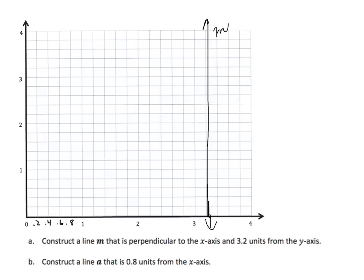Construct a line that is 8 tenths units from the x-axis, and it's going to have to be parallel to the x-axis. If we want 8 tenths units from the x-axis, we look at the y-axis y-coordinates: 2 tenths, 4 tenths, 6 tenths, 8 tenths — my line goes right there. We label this A.